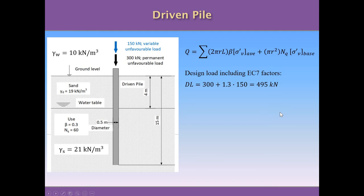First, we need to define the design load to compare against the pile capacity. The permanent load of 300 kN is affected by a coefficient of 1.0 per Eurocode, so it remains unchanged. The variable unfavorable load of 150 kN is affected by a coefficient of 1.3, increasing it by 30%. In total, the building will apply 495 kN to the pile, and this is the load we need to verify the pile can safely carry.